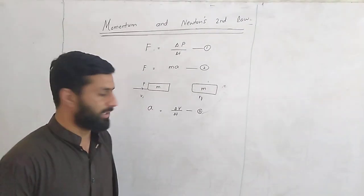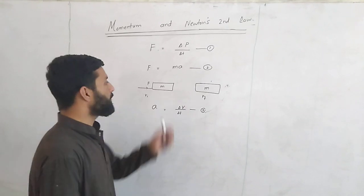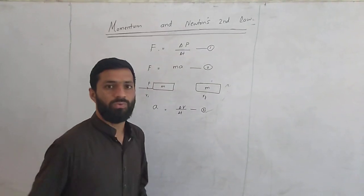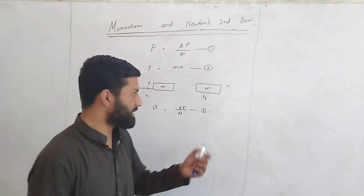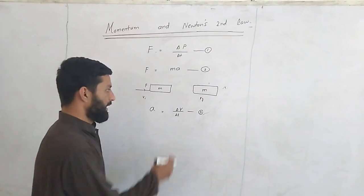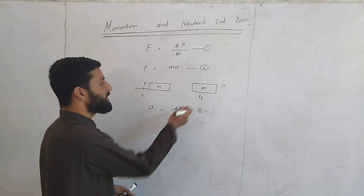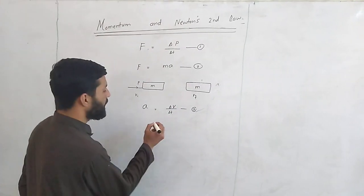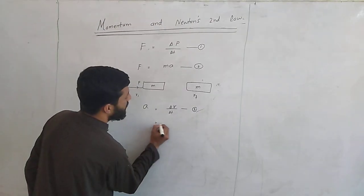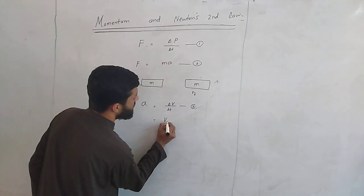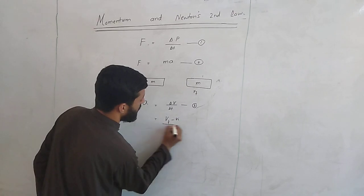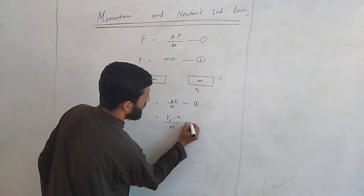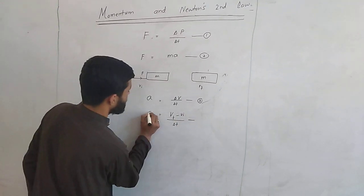Here we have two terms. Delta shows final minus initial, and this is the change in velocity. So we write final velocity minus initial velocity divided by delta T.